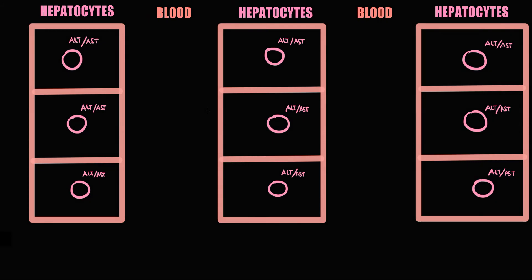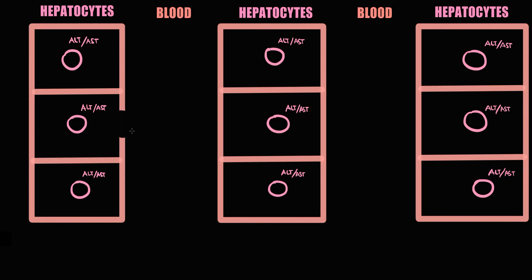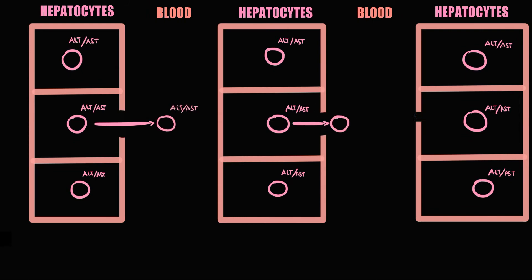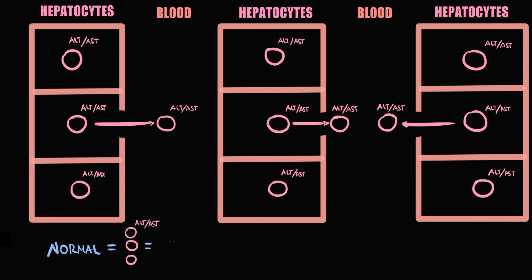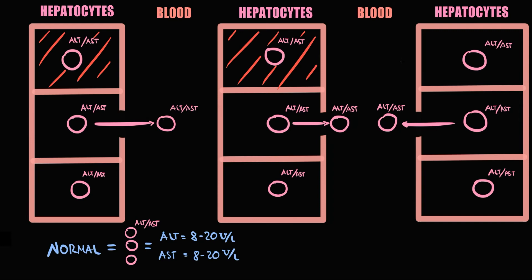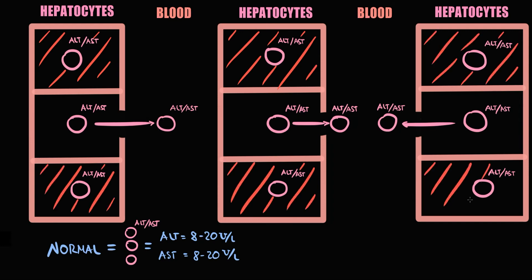As with any tissue in the human organism, liver tissue undergoes self-renewal — a physiological process where old hepatocytes die and are replaced by new ones. When hepatocytes die, their inner content is released into the blood, including ALT and AST. Under normal conditions, hepatocyte turnover produces 8 to 20 units per liter of both ALT and AST, which are considered normal values. If liver damage occurs, a higher number of hepatocytes will die.